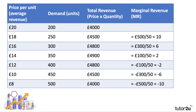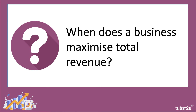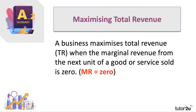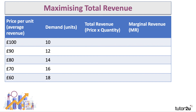We'll come to the diagrams in another video. So when does a business maximize their total revenue? This is a really important idea, particularly as some people think that maximizing revenue is a realistic alternative to maximizing profit. A business maximizes revenue when the marginal revenue from the next unit of a good or service sold is zero — when marginal revenue is zero.